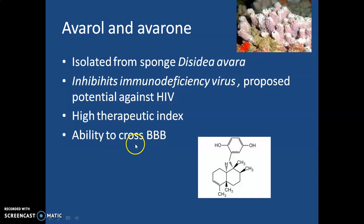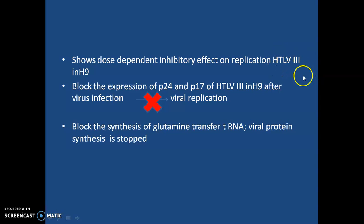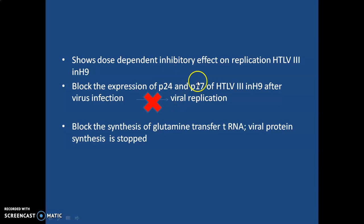Avarol also has the ability to cross the blood-brain barrier. Here you can see the structure of the compound avarol. Regarding its mechanism of action, it shows dose-dependent inhibitory activity on the replication of HTLV-3 in H9 cells — HTLV-3 being the HIV virus. It blocks the expression of surface antigens P24 and P17, which are present in the envelope of the HIV virus.